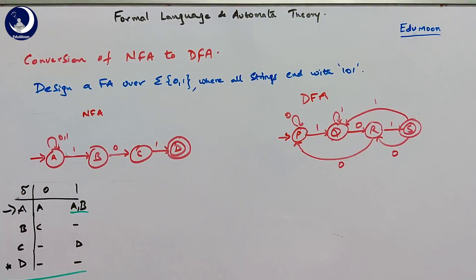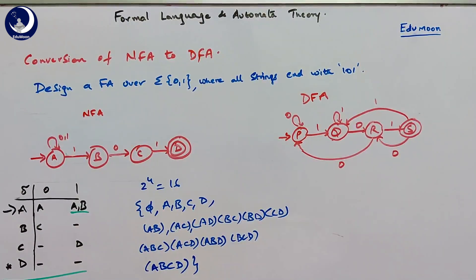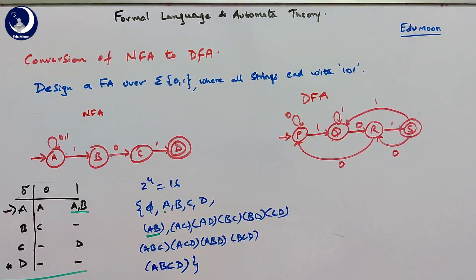In this video, we assume that all states obtained are a subset of these four states. With four NFA states, the total possible combinations are 2 power 4, that is 16 combinations: starting with the empty set, then individually A, B, C, D, then two-state combinations A,B; A,C; A,D; B,C; B,D; C,D; then three-state combinations A,B,C; A,C,D; A,B,D; B,C,D; and finally all four states. These are all possible combinations when converting an NFA with four states to a DFA.